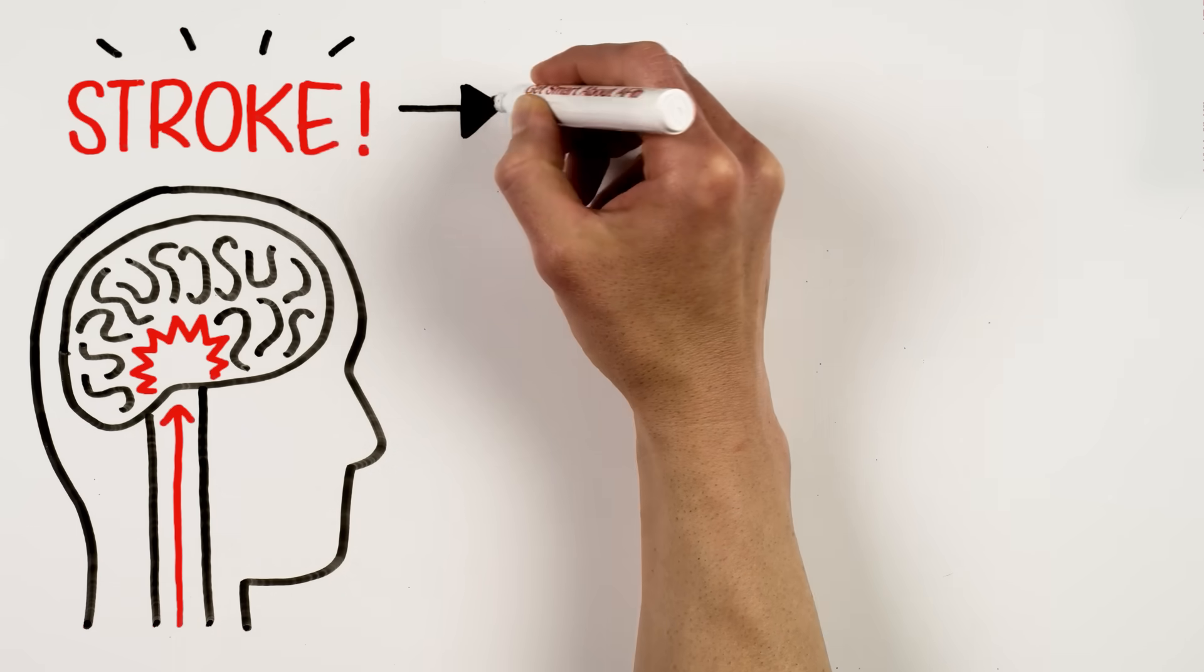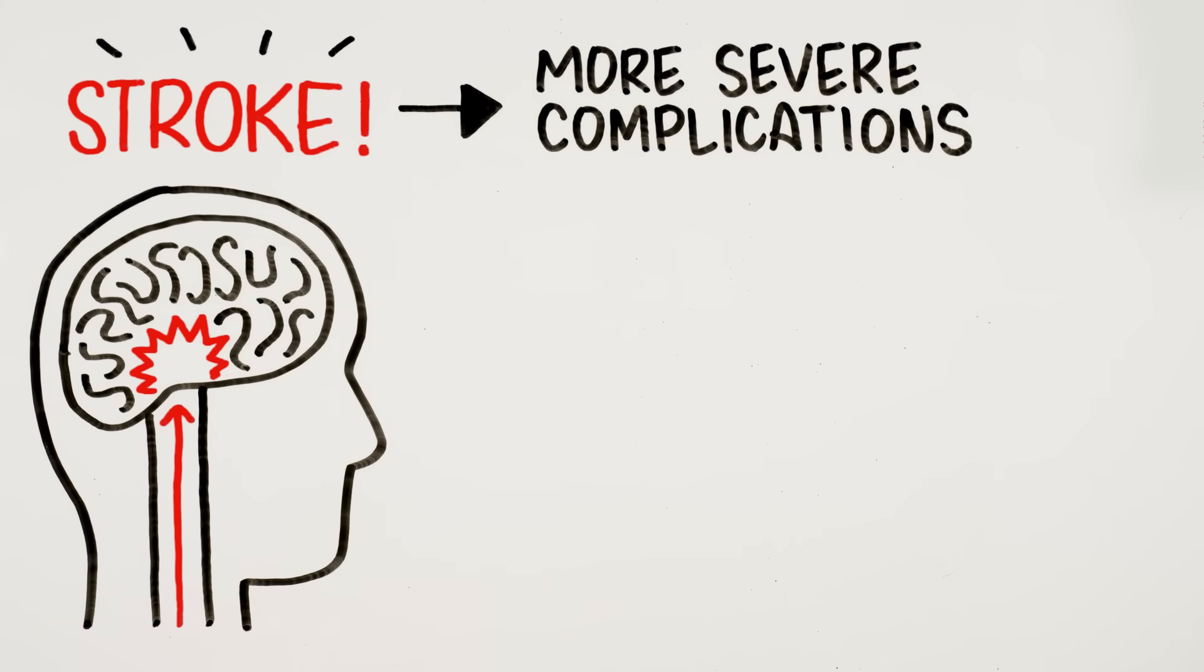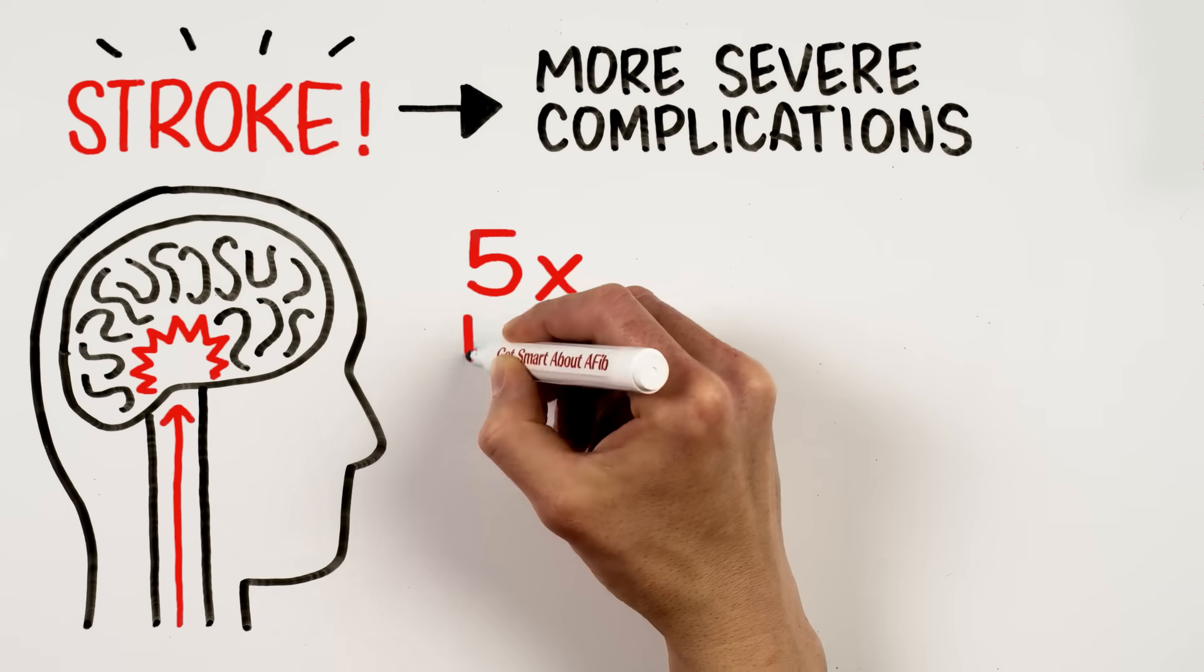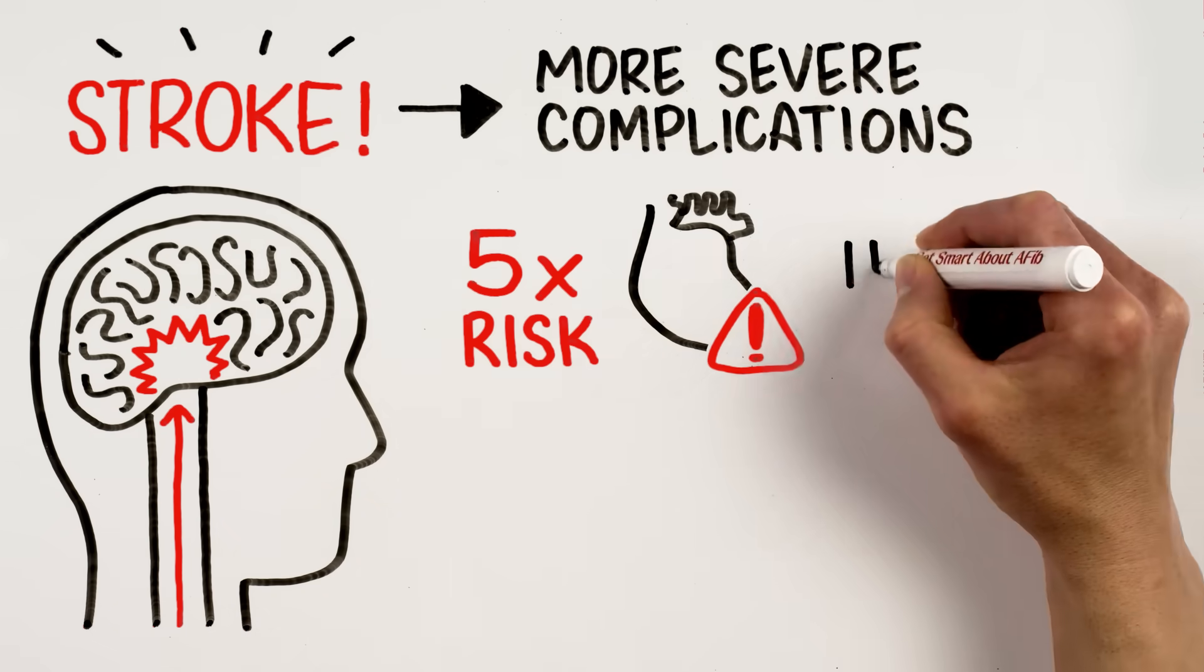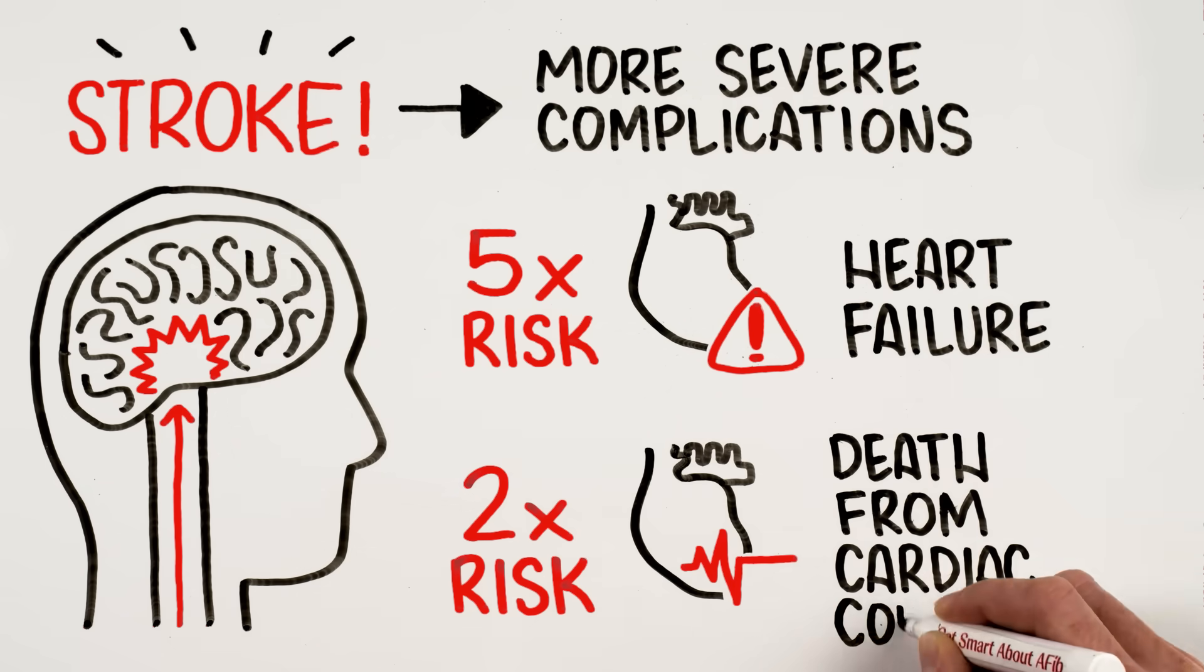Strokes resulting from AFib complications are often more severe compared to those from other causes. With AFib, you are also five times more likely to experience heart failure and two times more likely to suddenly die from cardiac complications.